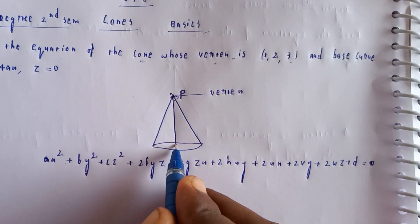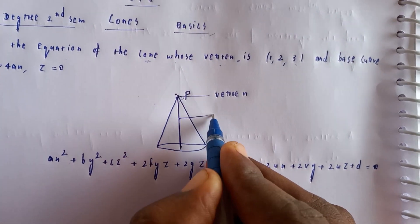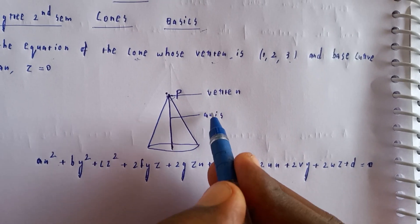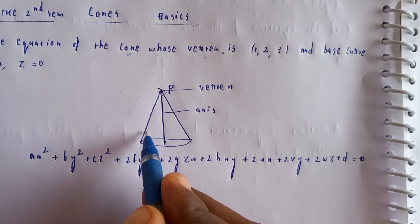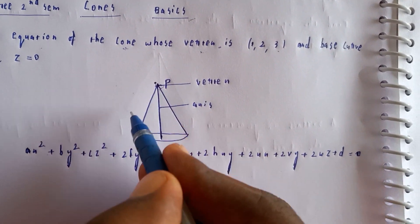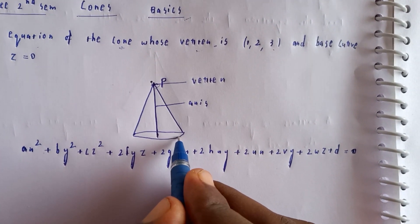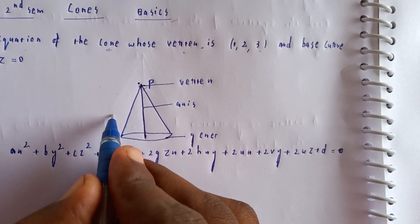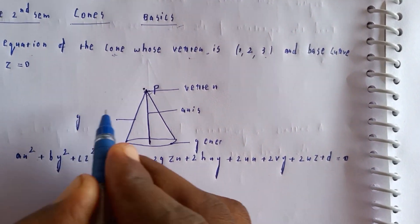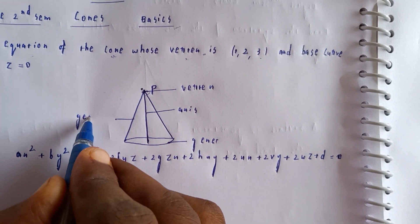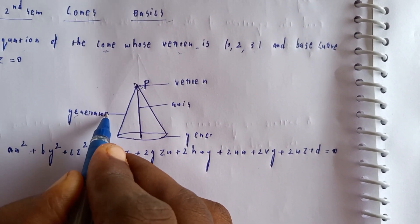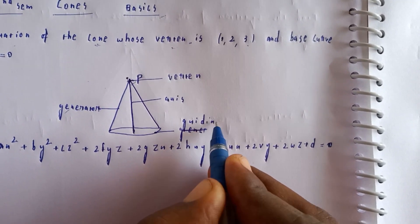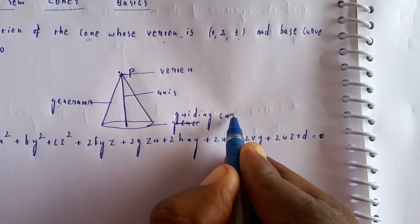The cone has an axis passing through the vertex. The generator is a straight line that passes through the vertex and rotates around the axis. The guiding curve, also called the base curve, is what the generator follows.